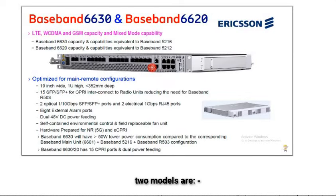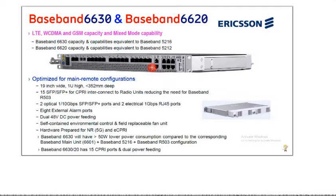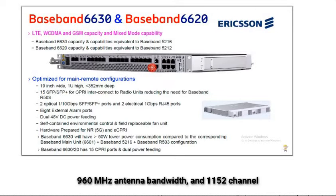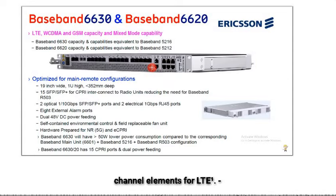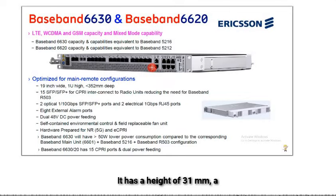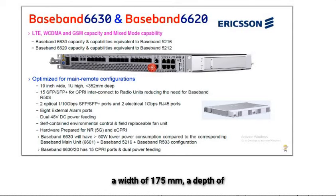Baseband 6630 has higher capacity than Baseband 6620: it supports up to 8,000 connected users, 960 MHz antenna bandwidth, and 1152 channel elements for LTE. Baseband 6620 supports up to 2,000 connected users, 480 MHz antenna bandwidth, and 576 channel elements for LTE. Baseband 6630 has a larger size: height 31 mm, width 350 mm, depth 280 mm, weight 4 kg. Baseband 6620: height 31 mm, width 175 mm, depth 280 mm, weight 2 kg.